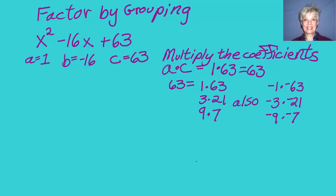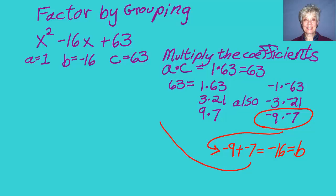Now that's the pair we want right there, because if you add negative 9 plus negative 7, you get negative 16, which happens to be our b number. And that's how you decide what terms you're going to use in the middle of a 3-term quadratic polynomial to turn it into a 4-term quadratic polynomial, which is precisely what I'm going to do right now.